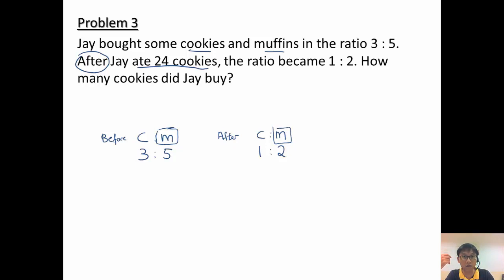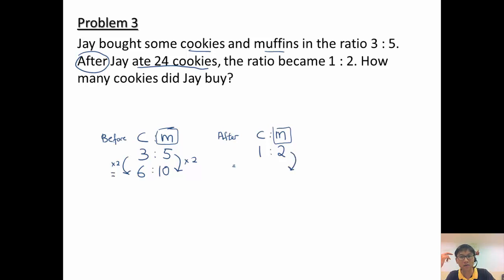So look at the muffin values: before is 5, after is 2. Can 2 become 5 directly? No, so I multiply both. I take the after ratio times 5: 1 times 5 equals 5, and 2 times 5 equals 10. I also multiply the before ratio times 2: 3 times 2 equals 6, and 5 times 2 equals 10. Now my muffin is the same — both are 10 units.